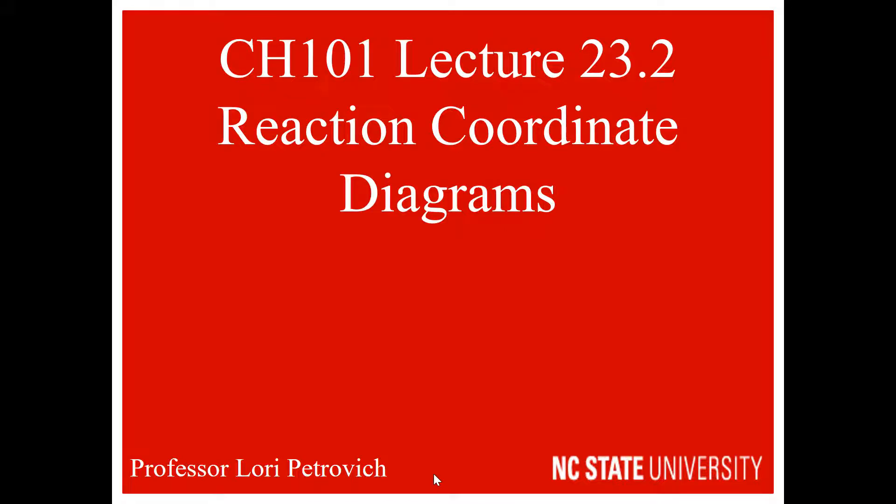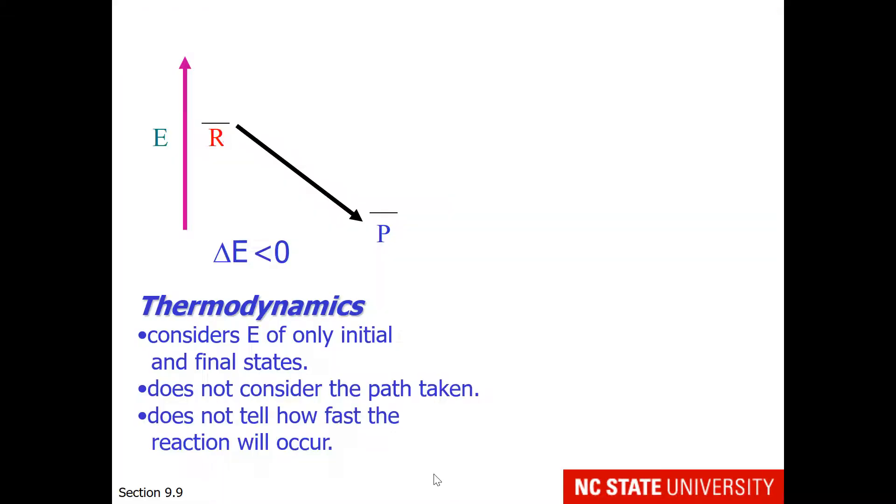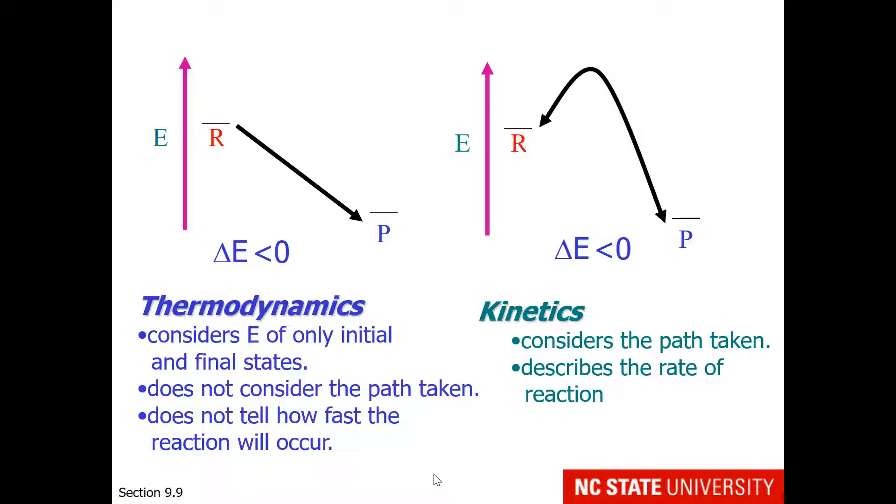The next part of this lecture concerns reaction coordinate diagrams. We are finished with the first part of thermochemistry, which considers the energy of only the initial and final states, but does not tell us what reaction path is taken or how fast the reaction will occur. We are now moving to kinetics, which considers the reaction path taken and describes the rate of the reaction.